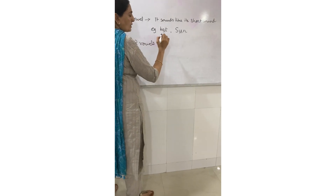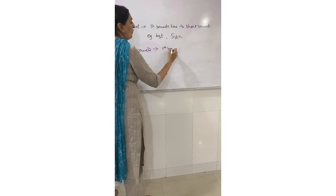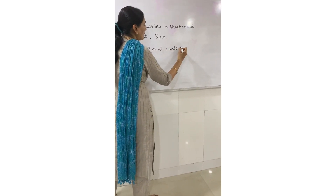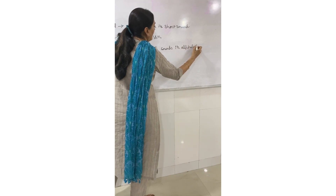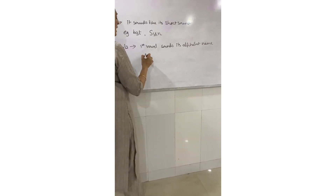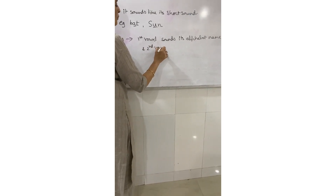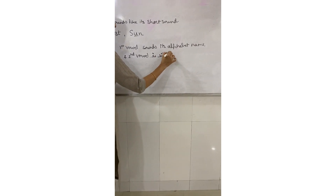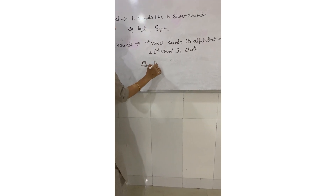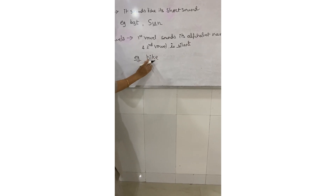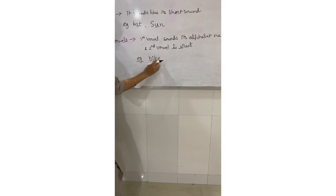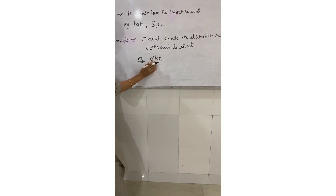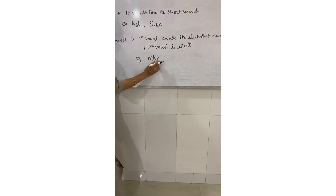If a word has two vowels, the first vowel says its alphabet name — its long sound — and the second vowel is silent. For example, 'bite': B-I-T-E. The vowel I says its alphabet name 'I', and the E is silent.